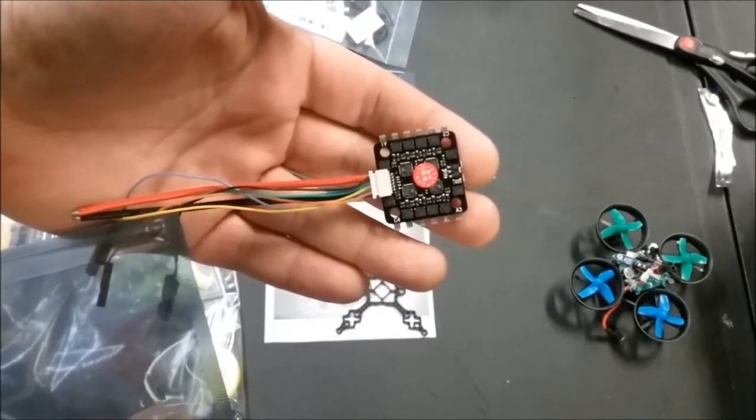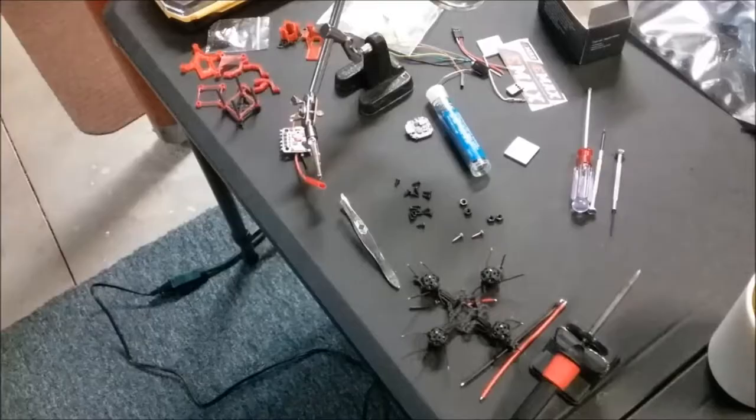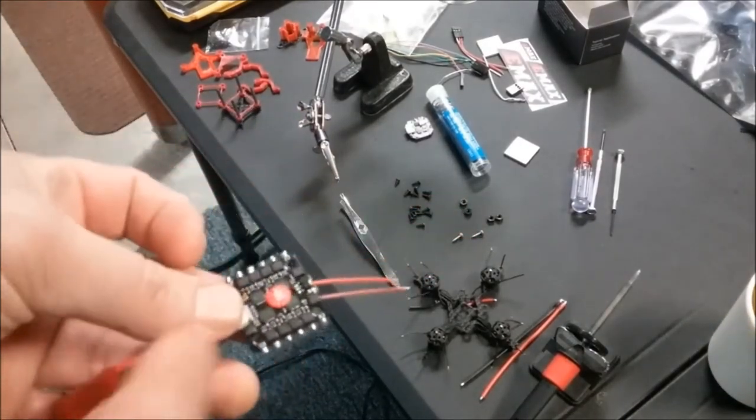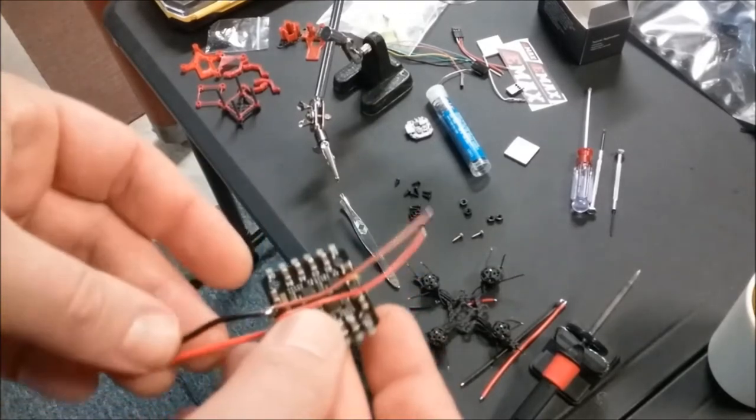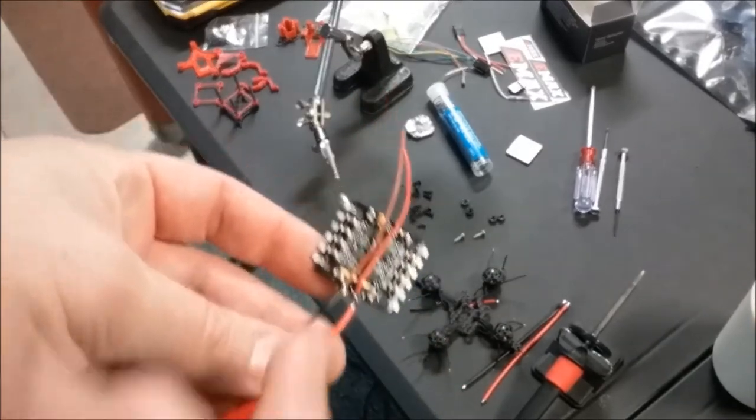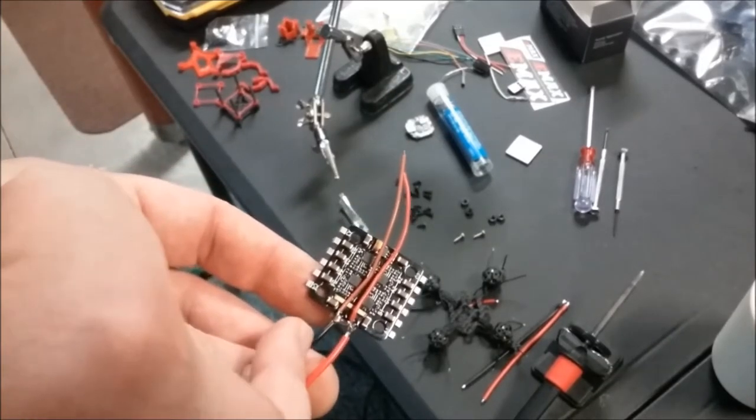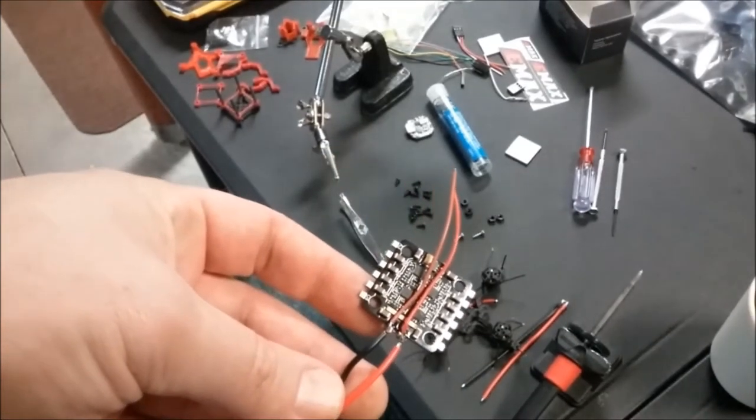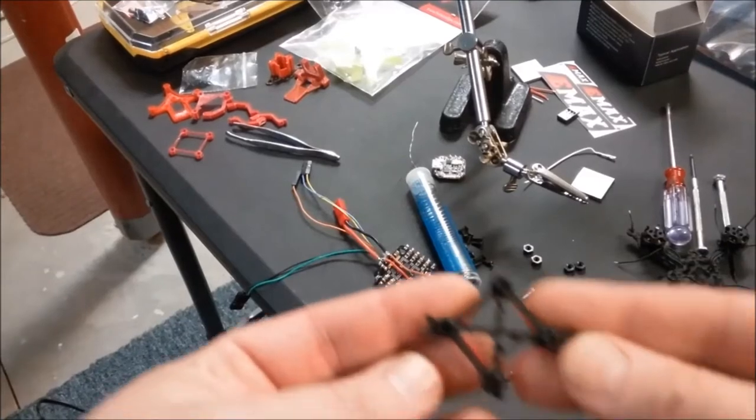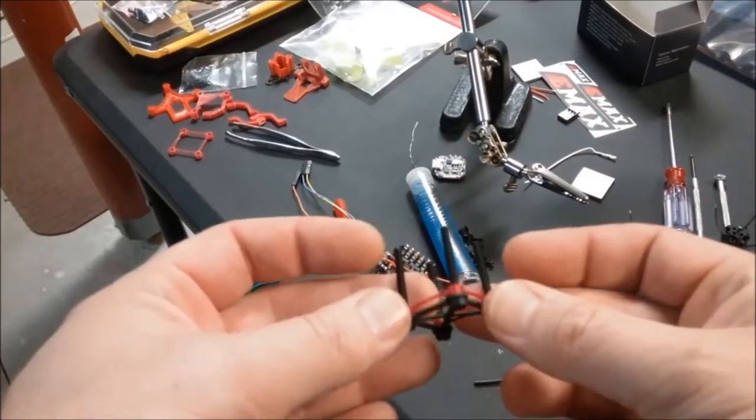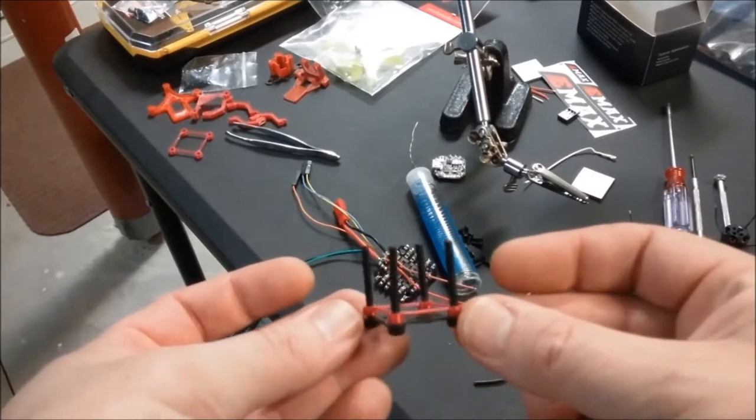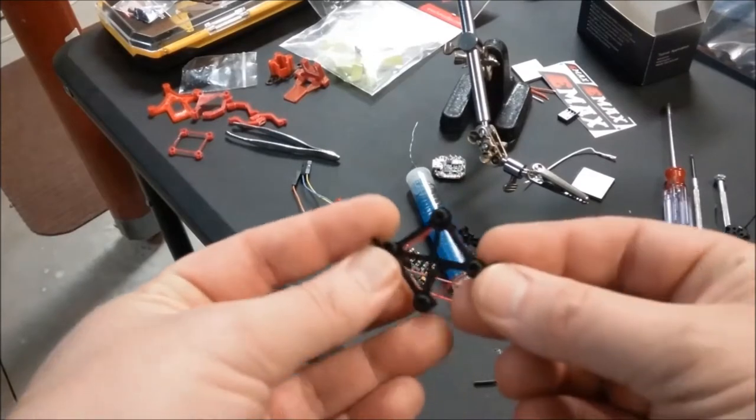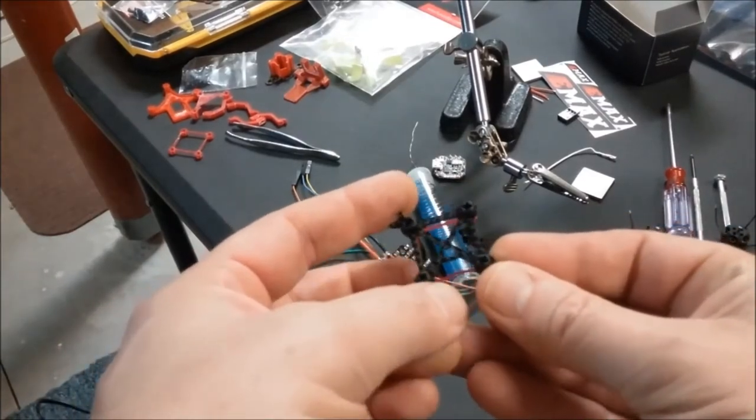The first thing I'm doing here is getting the ESC ready and I'm going to go ahead and tin all of my points. I've already connected the JST connector and then I connected two wires to the power positive and negative. They're going to run up to the flight controller.